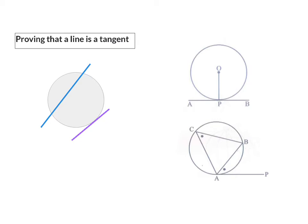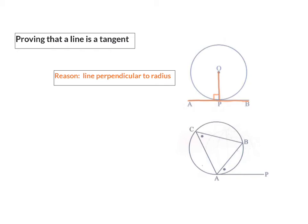To prove that a line is a tangent to a circle, we are going to use the converse of our tangent theorems that we know. The first theorem that we are going to have a look at is we know that a tangent is always perpendicular to the radius. So, if we can prove that the line we need to prove is a tangent is perpendicular to the radius by using other geometry, we can say that that line will be a tangent. The reason for this theorem? Line perpendicular to radius. We cannot use the word tangent yet because that is what we are proving.